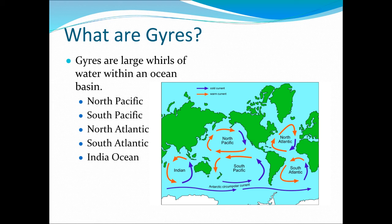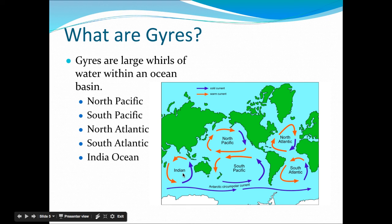These surface currents work together in systems and form what are called gyres — basically big circular currents. There are five of them on this map: the Indian, South Pacific, North Pacific, North Atlantic, and South Atlantic. Each of these is made up of both warm water currents that carry warm water and cold water currents.